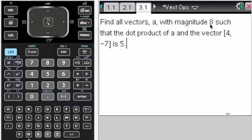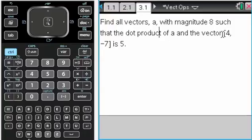So if we want to find all the vectors that have a magnitude of 8, we're calling this vector a, such that the dot product of a and the vector 4, negative 7 is 5.